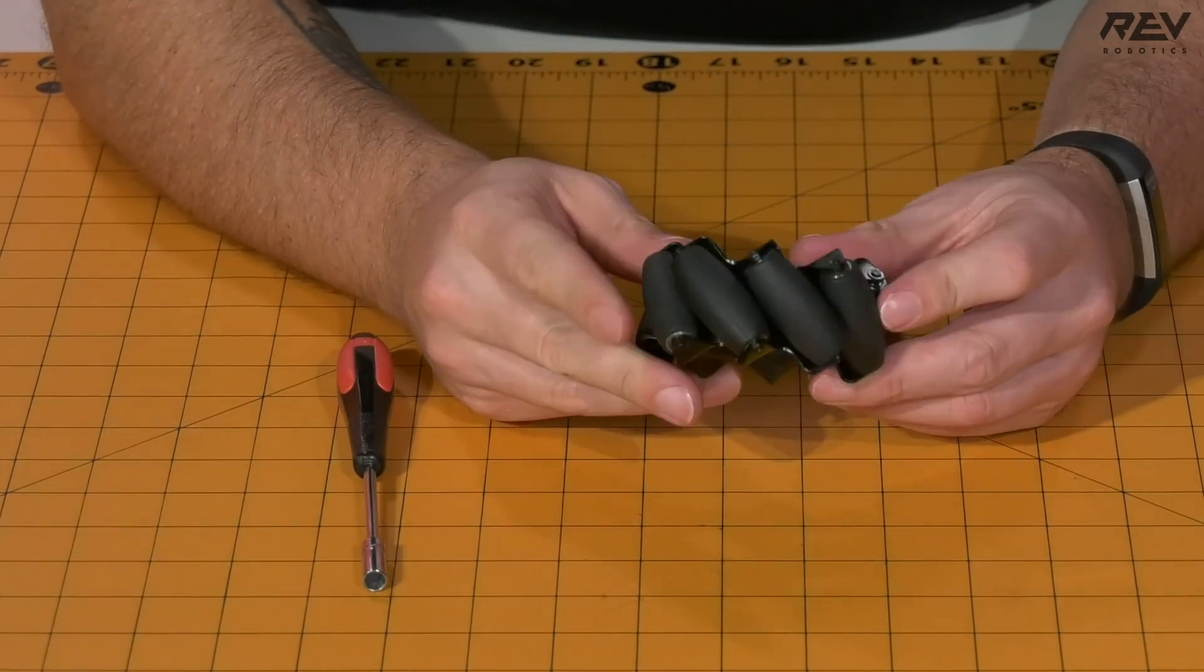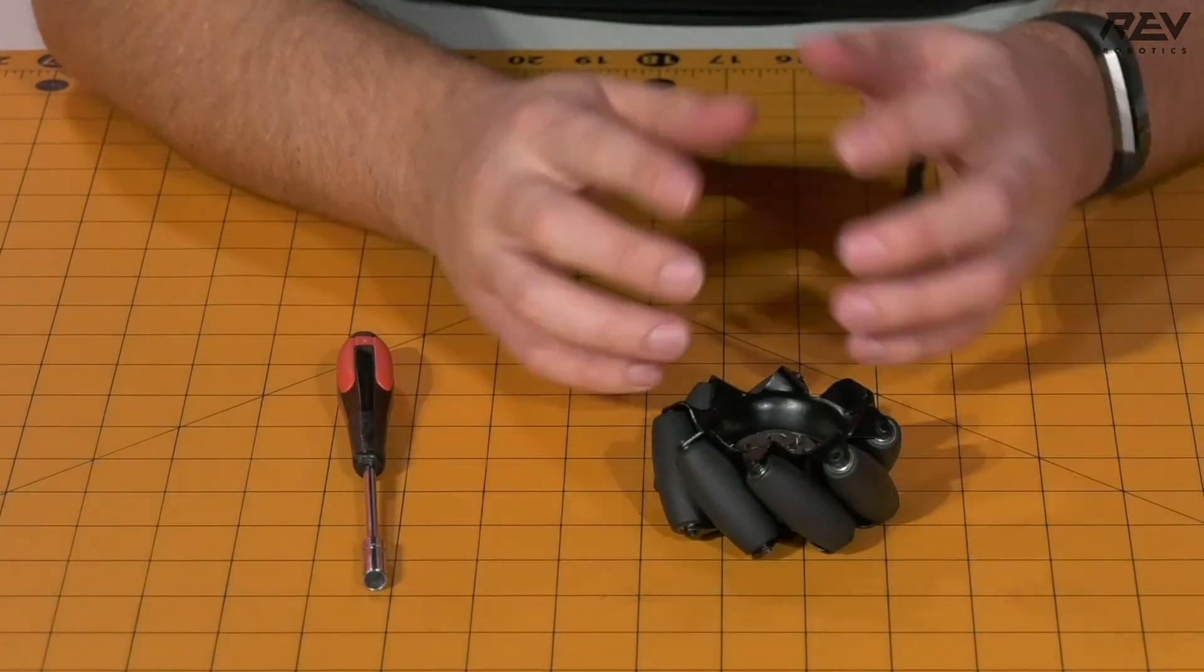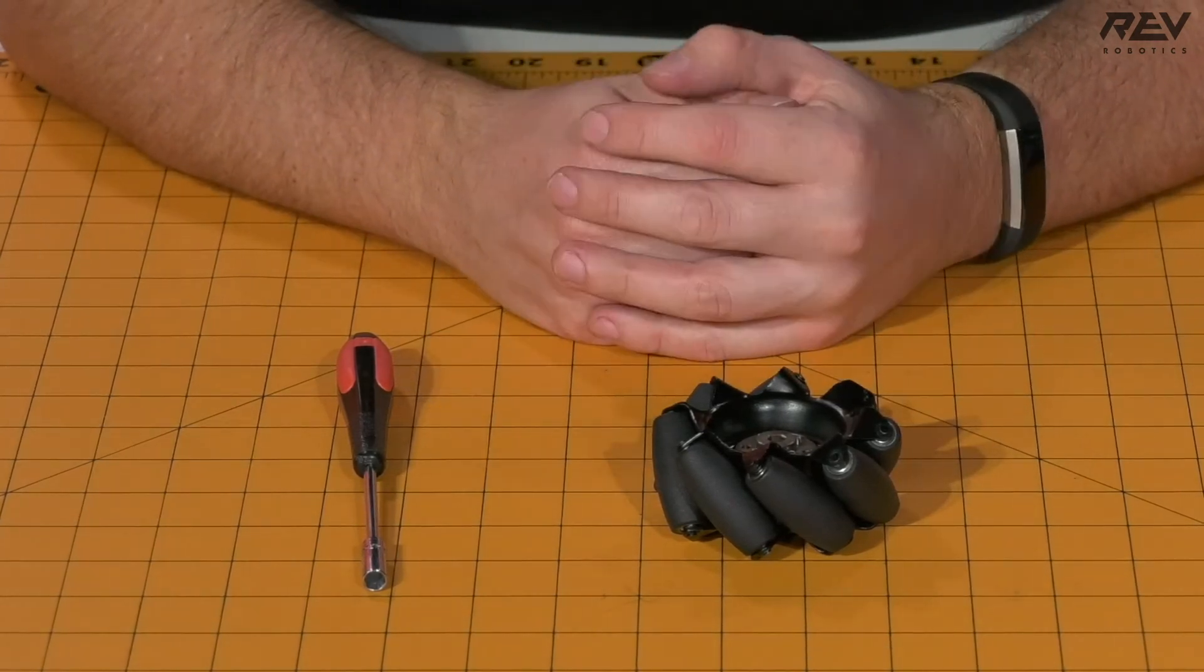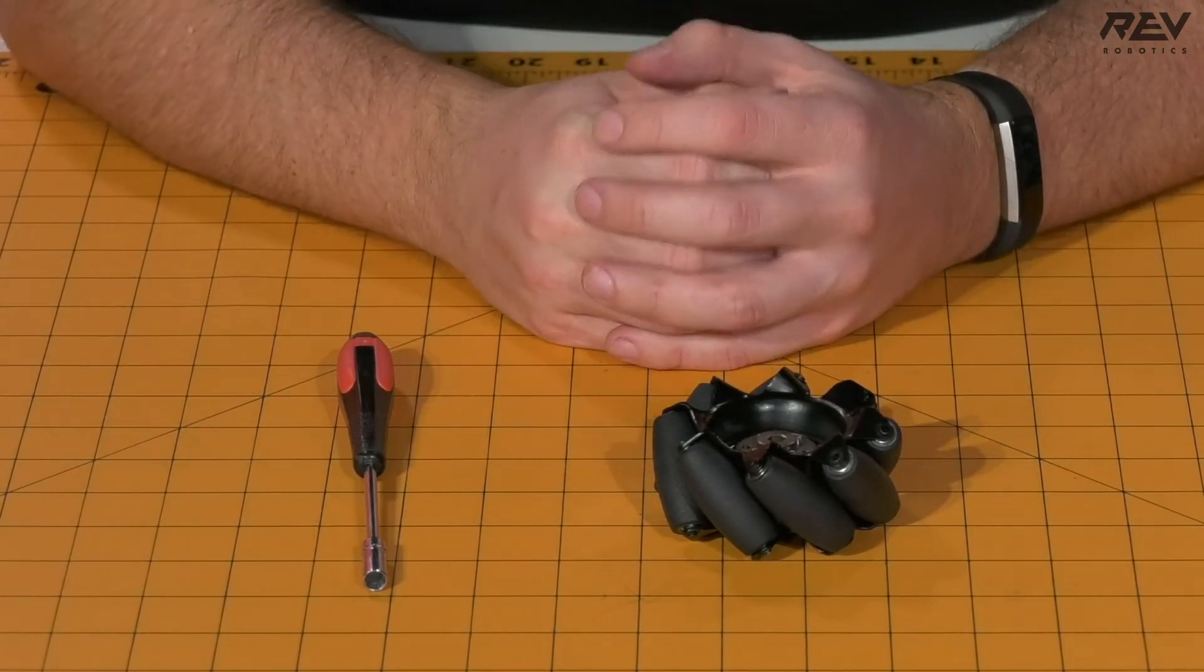Once that is complete, your Mecanum wheel assembly is done. You'll need to repeat this step for all the Mecanum wheels that came with the Mecanum wheel set.